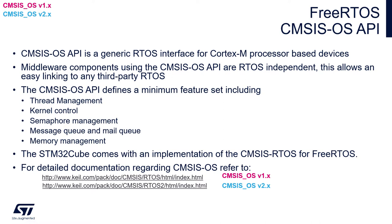The CMSIS-OS API defines a minimum feature set, including thread management, kernel control, semaphore management, message queue and mail queue, and memory management. STM32 Cube libraries come with an implementation of CMSIS-RTOS for FreeRTOS.